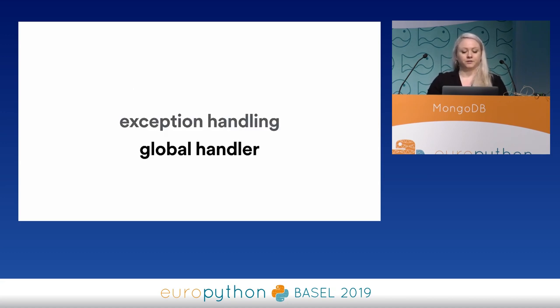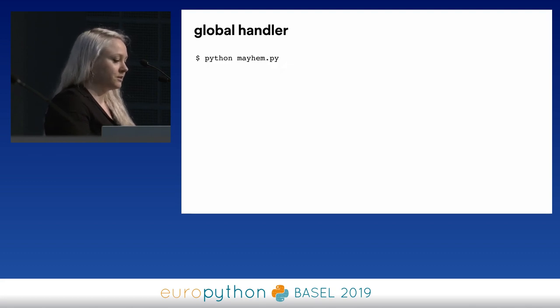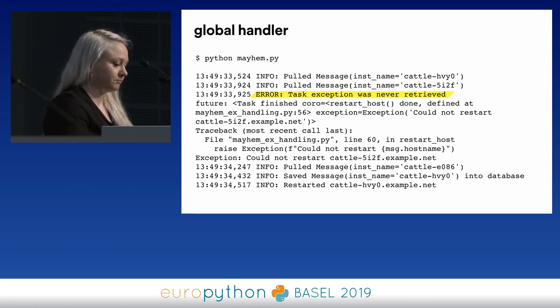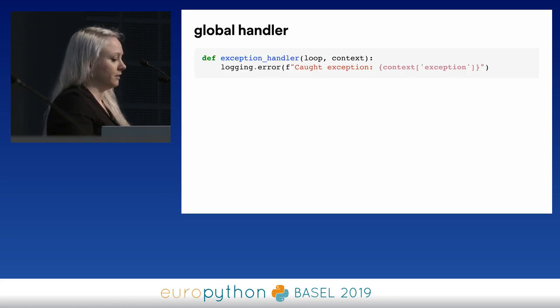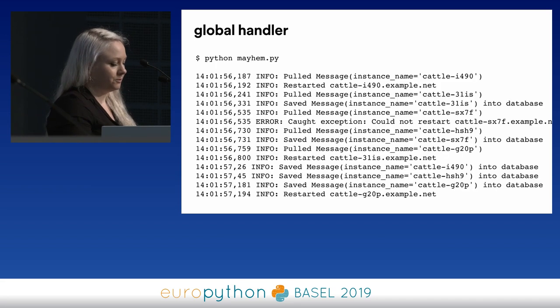You might have noticed that we're not doing any handling of exceptions so far. Let's revisit our restart_host coroutine and add a super realistic exception. Running this, we do see the exception is raised, but we get a "task exception was never retrieved" message. This is because we don't properly handle the result of a task when it raises. What we can do is define a global exception handler — very simplified — and then attach it to our loop, similar to signal handling. If we rerun this, we do see logging of the exception, meaning we are actually handling it.